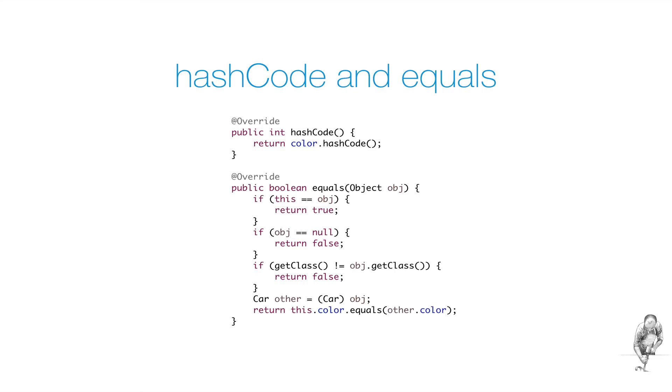In short, you do that by overwriting the two methods hashCode and equals. If you don't overwrite these two methods, you get the default behavior, as defined in the class object. The default behavior of hashCode and equals is actually the same as for object identity.